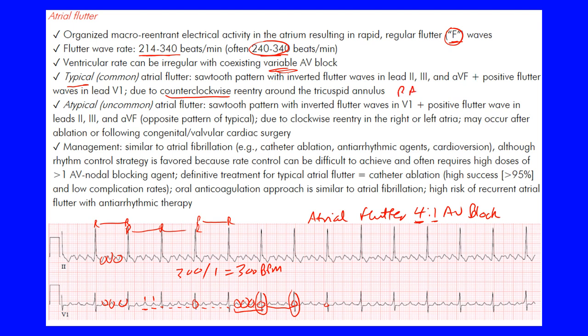The typical form involves the right atrium and accounts for about 90% of cases. The atypical or uncommon form makes up the remaining ~10%. It also shows a sawtooth pattern but essentially the opposite: inverted flutter waves in V1 and positive flutter waves in the inferior leads — because it has a clockwise re-entry circuit in the right atrium or involving the left atrium.